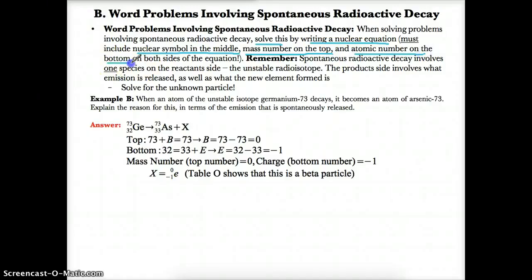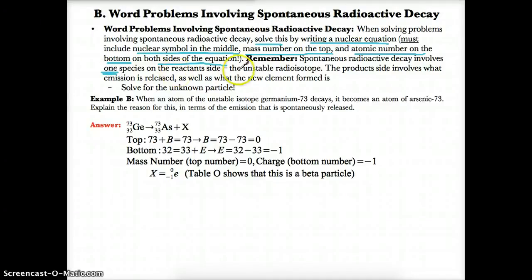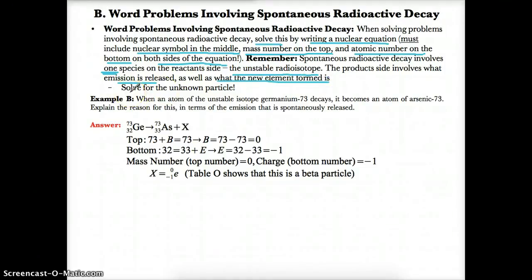In spontaneous radioactive decay, there is only one species on the reactants or left side — the unstable radioisotope you start with — while the product side includes the emission released and the new element formed. Write the unknown emission with B as the mass number on top and E as the charge on the bottom for the mystery species.